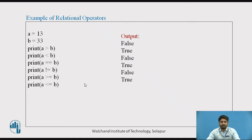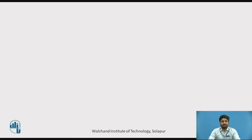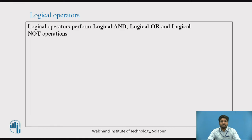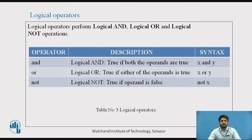Logical operators: Logical operators perform logical AND, logical OR, and logical NOT operations. In this table 3, it shows the logical operators and we are using the operators like and, or, and not. Logical AND shows true if both the operands are true. True if either of the operand is true.